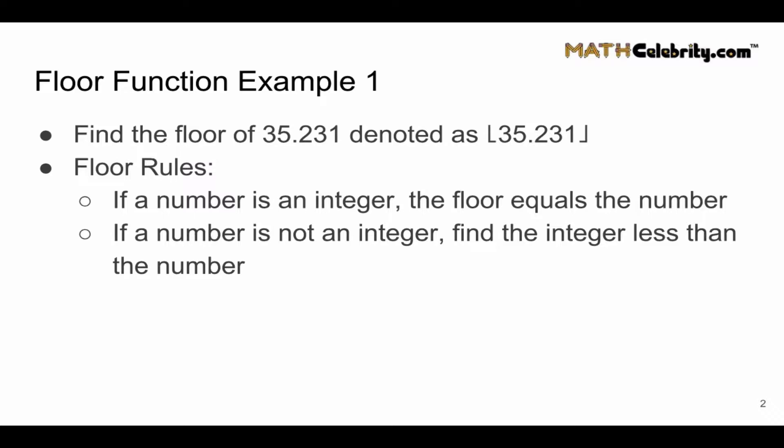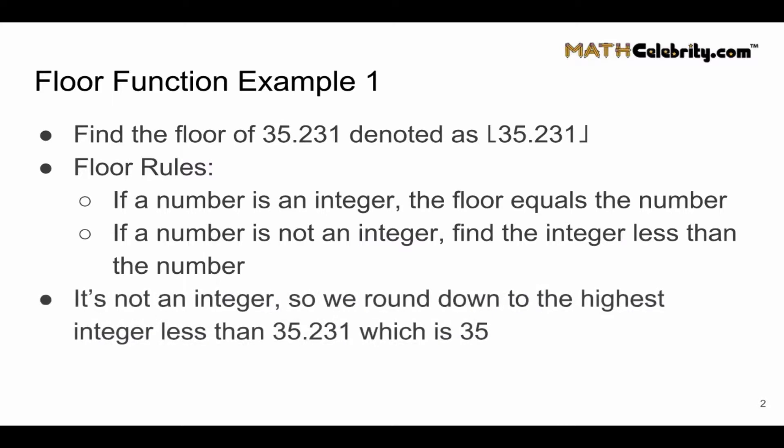We want to find the closest integer less than the number. We're going to round down and the highest integer less than 35.231 is 35. So the floor of 35.231 equals 35.